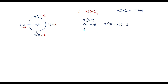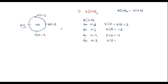For n=1, substituting into x[4-n] gives x[3], and x[3] = -2. For n=2, it gives x[2], and x[2] = -1. For n=3, it gives x[1], and x[1] = 3. Therefore x[-n]₄ = {2, -2, -1, 3} for n = 0, 1, 2, 3 respectively.